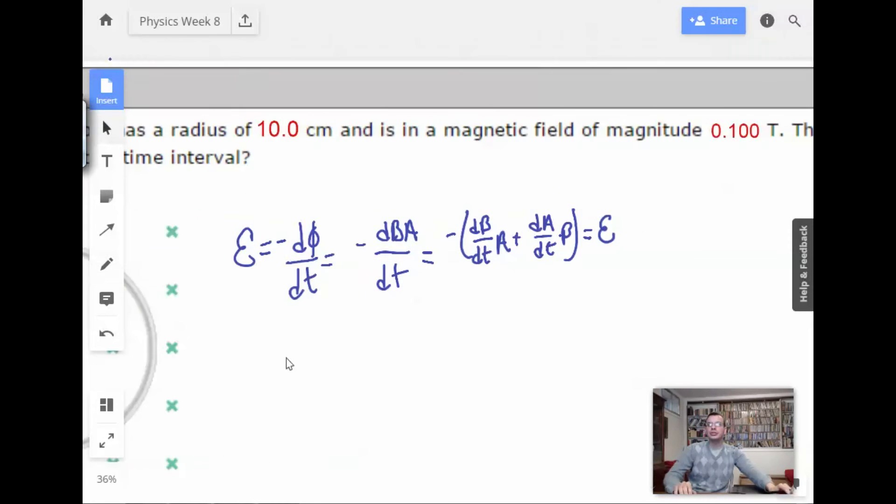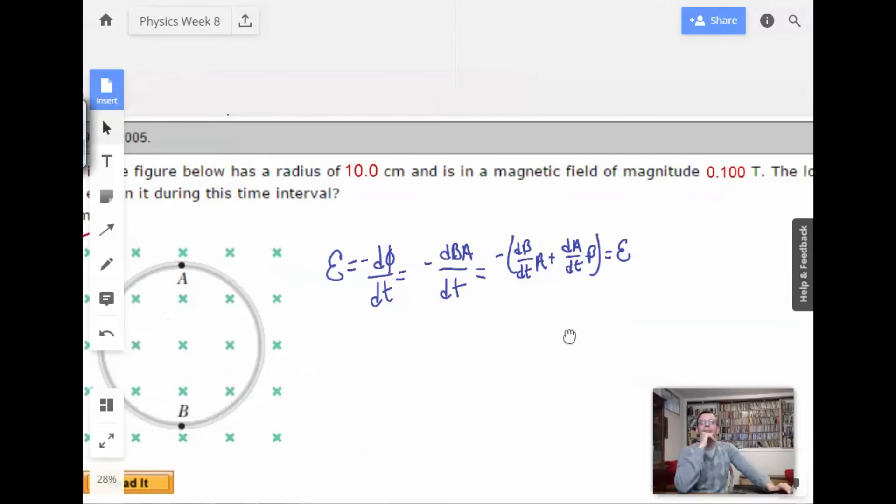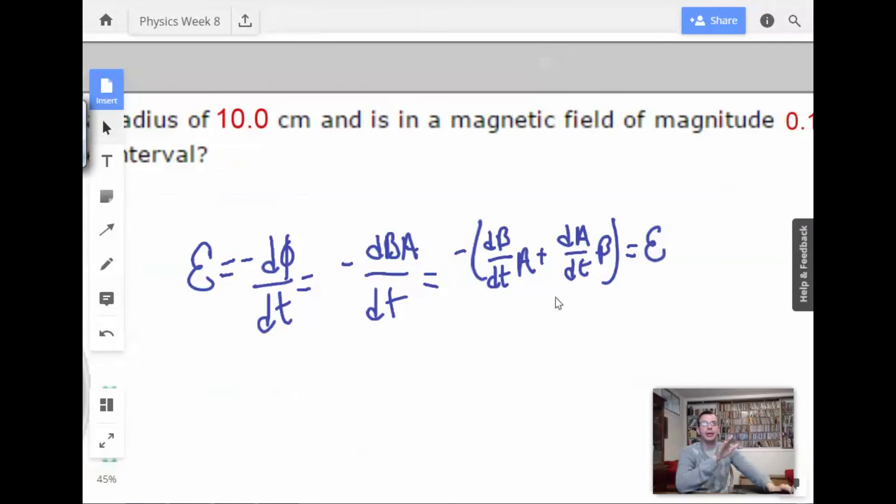All right, so looking at this guy, so magnetic field stays the same the whole time. There is zero change in magnetic field. So I know that dB dt goes to zero, which means this whole entire portion goes to zero. Now, A, on the other hand, does not.